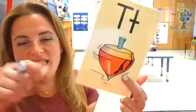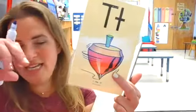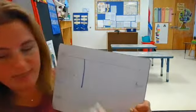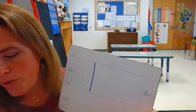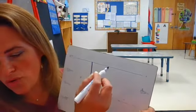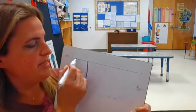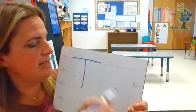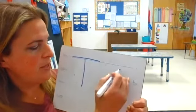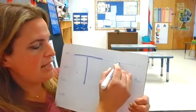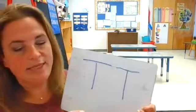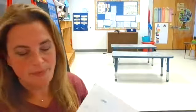T, top, t. Going to start at the plain line, go down to the grass line. Stop. Go make a cross at the skyline — start at the skyline, go across the skyline and stop. Skyline to the grass line and stop, and across the skyline and stop. T, top, t.